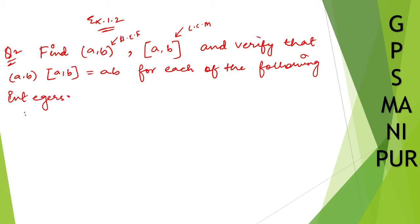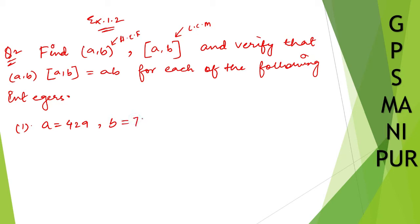Solution. Question number 2, Roman number 1. Let me write down the question. a is equal to 429 and b is equal to 715.